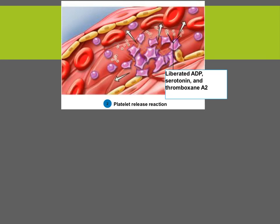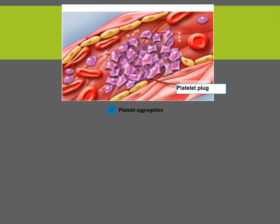The second step is the platelet release reaction. The sticky platelets become activated, extend many projections, and liberate the contents of their vesicles, including ADP, serotonin, and thromboxane A2. As platelets release their contents, these chemicals make other platelets sticky and cause them to gather together. This accumulation — platelet aggregation — is the third step and forms what is known as a platelet plug. A platelet plug can stop blood loss completely if the hole in a vessel is not too large.